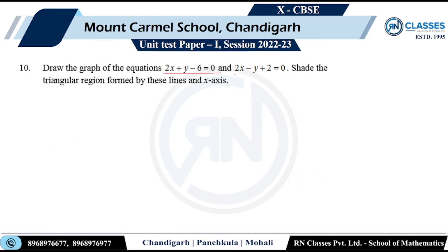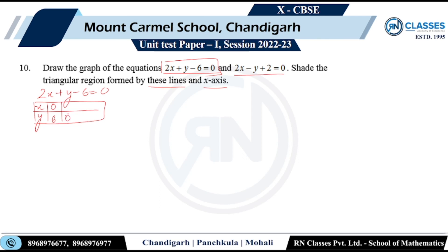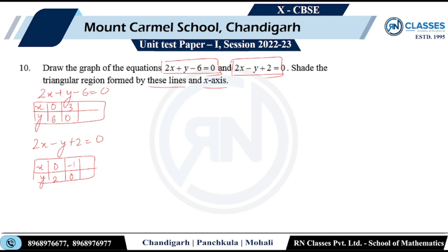He says draw the graph of these two equations and shade the triangular region formed by these lines and the x-axis. For 2x plus y minus 6 equals 0: when x=0, y=6; when y=0, x=3. For 2x minus y plus 2 equals 0: when x=0, y=2; when y=0, x=-1. A line is determined by two points so I take two for each. The first line passes through (0,6) and (3,0). The second line passes through (0,2) and (-1,0).